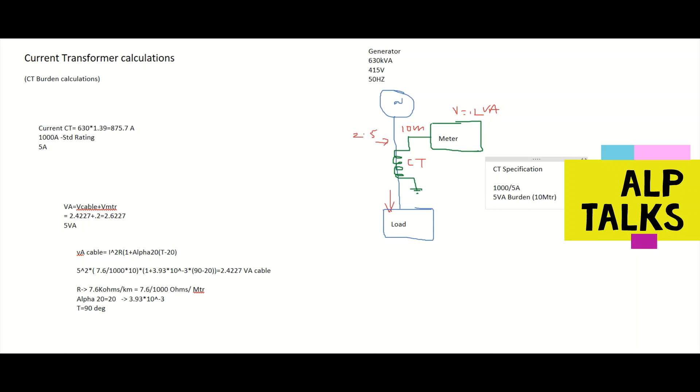If cable length is more, we will have more burden. So what is the class of this CT? CT class is class 1 as it is metering class. So this is about this. We will meet in next calculation. Thank you.